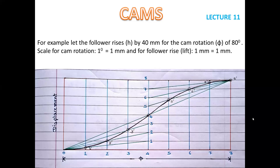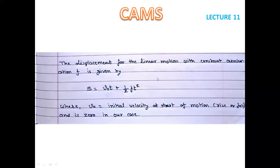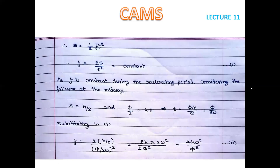Now let us look at the analytical part. We know that displacement for linear motion of constant acceleration F is given by: S = V₀T + ½FT². Here V₀ is the initial velocity, T is time, and F is acceleration. In our case the initial velocity V₀ = 0, so the equation becomes S = ½FT². Rearranging for F: acceleration F = 2S / T². Since F is constant, we write F = 2S / T² — let this be relation number 1.